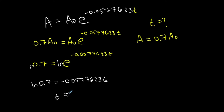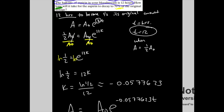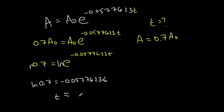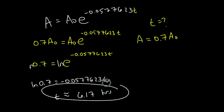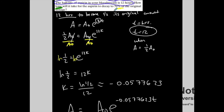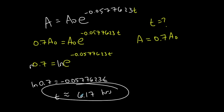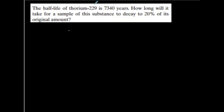Dividing ln(0.7) by −0.0577623, t is approximately 6.17 hours. So it takes about 6.17 hours for aspirin to decay to 70% of its original dosage.